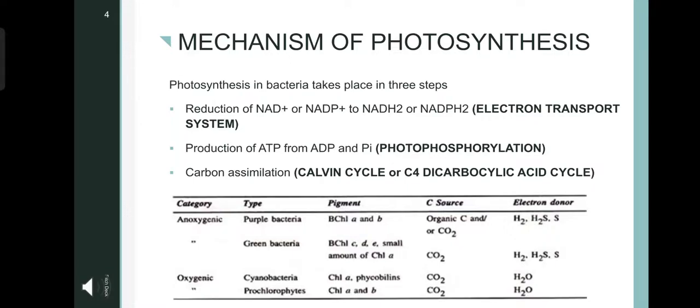Mechanism of photosynthesis. Photosynthesis in bacteria takes place in three main steps. First is the reduction of NADP plus or NAD plus into NADH2 or NADPH2, which is also known as electron transport system. Second step is the production of ATP from ADP and inorganic phosphorus. It is known as photophosphorylation. Third step is carbon assimilation. This is the Calvin cycle or C4-dicarboxylic acid cycle.